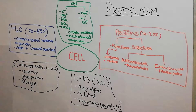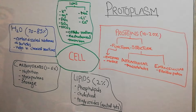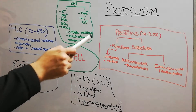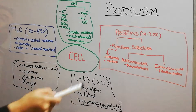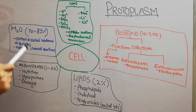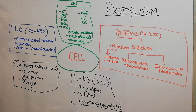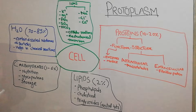...are all collectively known as protoplasm. So what is protoplasm? Protoplasm basically consists of all the nutrients and different substances which make up the cell — all the organelles, all the structures, the membranes, etc. Now we start studying the different components of the protoplasm.